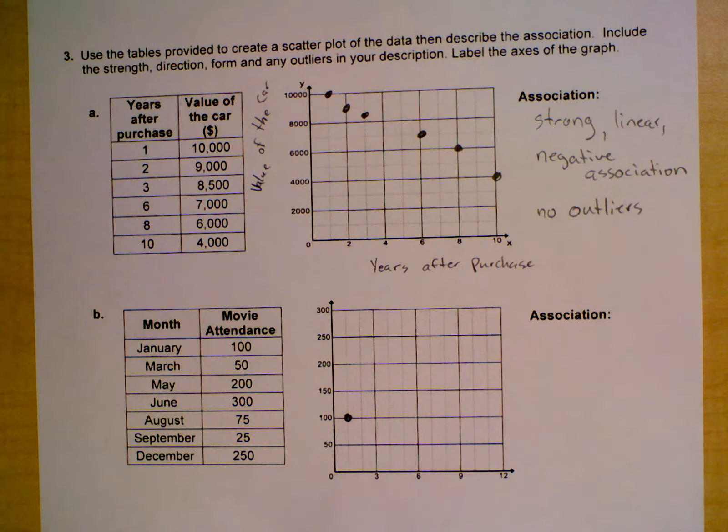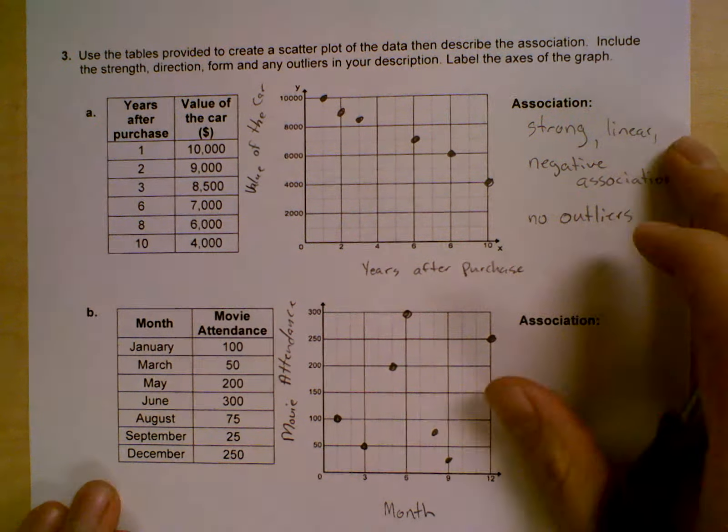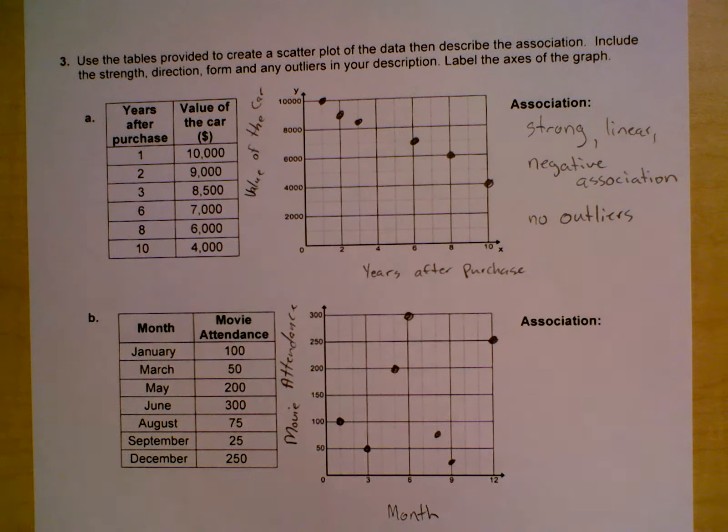I've plotted the points. I have month on the x-axis, movie attendance on the y-axis. And then for the association, go ahead and answer that on the computer.